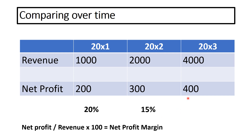In the final year, we've got a net profit of 400 and a revenue of 4,000, so the net profit margin has fallen again — it's fallen to only 10%. So even though the figures look good, the revenue has quadrupled and the net profit has doubled, actually the net profit margin has decreased by 50%. You'd be very concerned if this was your business.